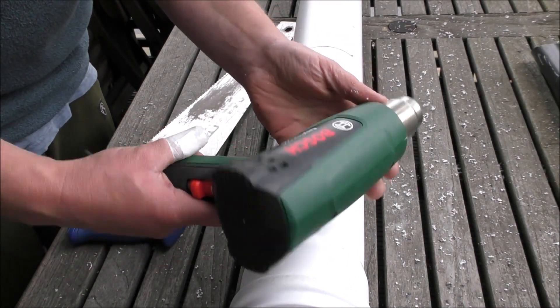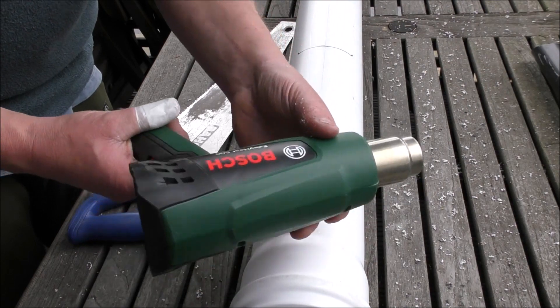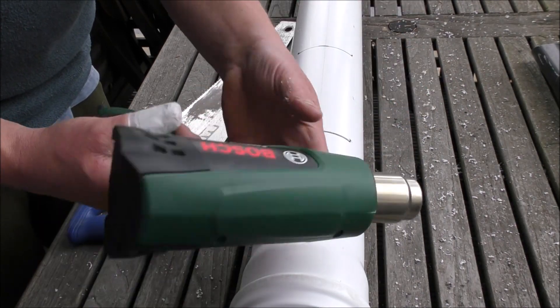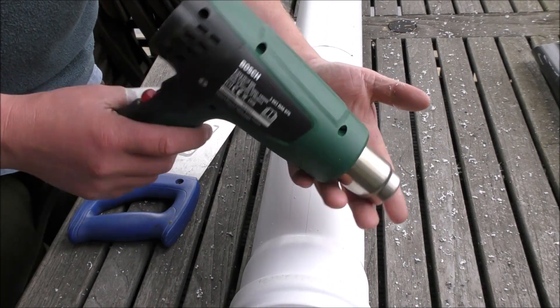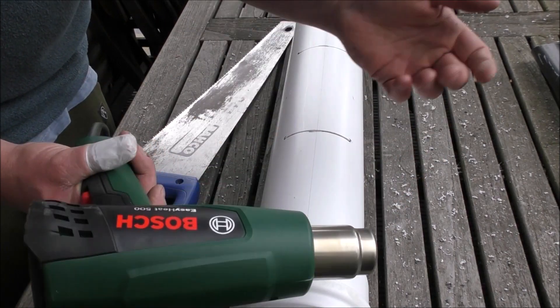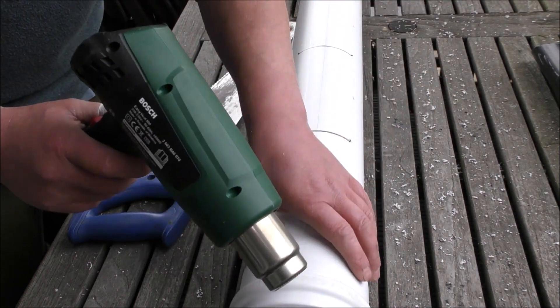That's what we're using. It's a Bosch Easy Heat 500 heat gun. Other heat guns are available at a much lower price. Bosch is a very good make. I bought this because I want to use it to strip paint and all sorts of things in years to come. It's a sound investment.